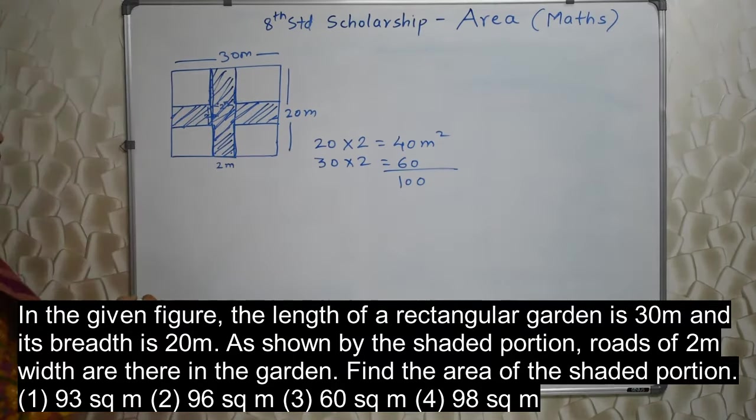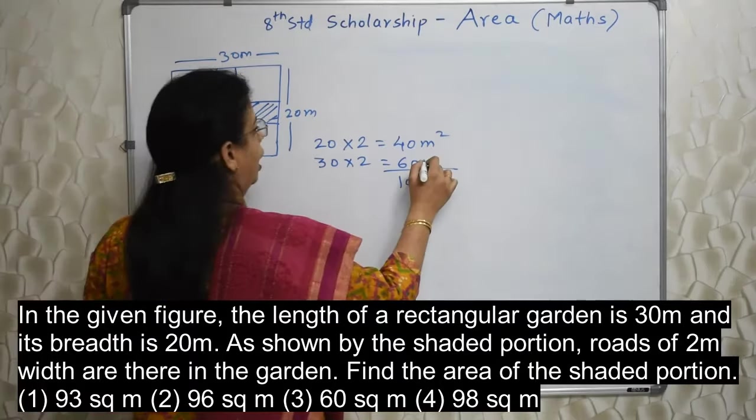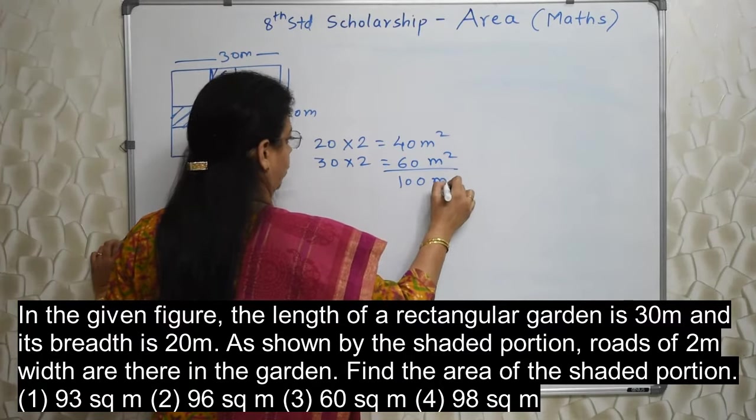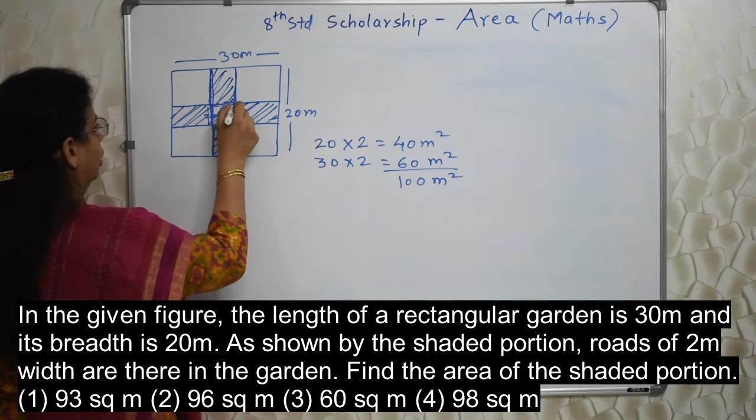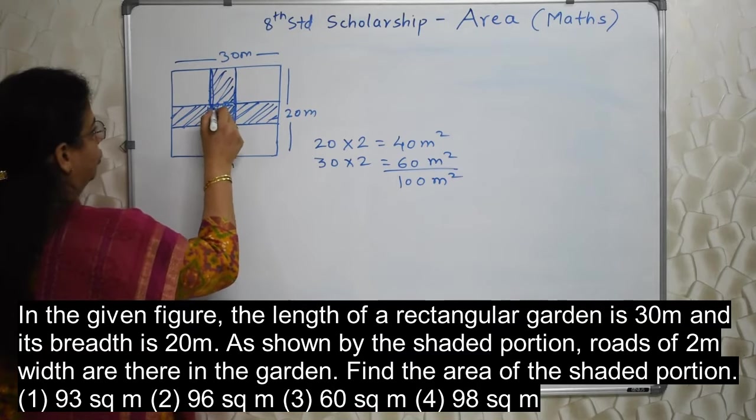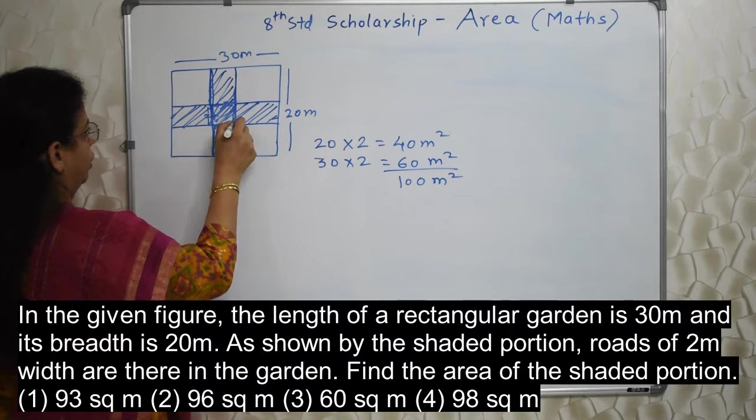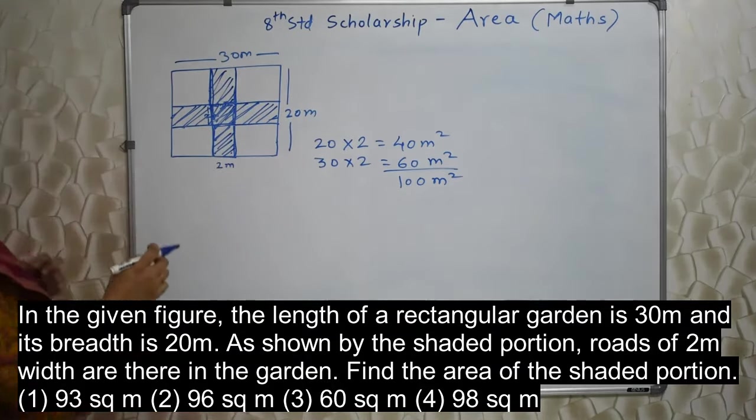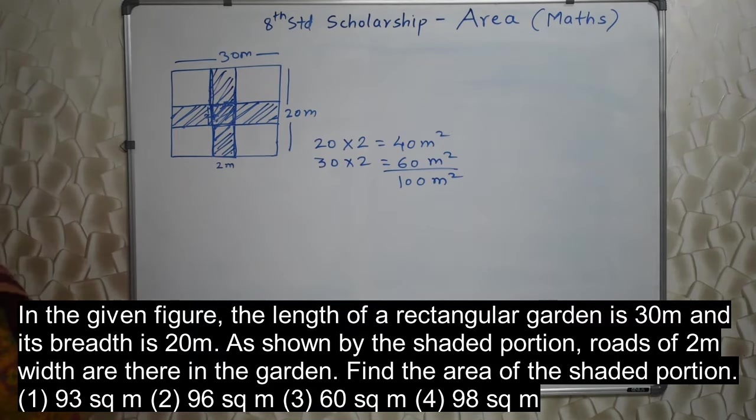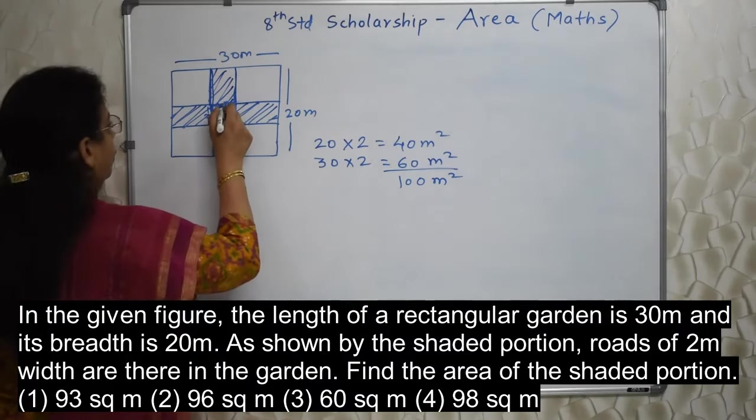So addition is 100. If you choose option which is 100, your answer will be wrong. Because in that case, this particular portion, we are duplicating. This small square here is counted in both. How can we take it 2 times? No. That is not allowed.